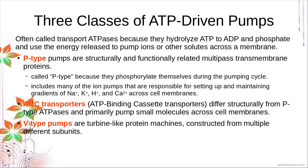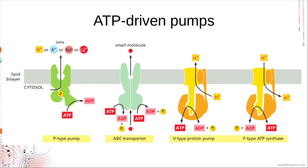We also have V-type pumps: turbine-like protein machines constructed from multiple subunits. Here are the three types of ATP-driven pumps. For the P-type, the phosphate group from ATP hydrolysis is transferred to the pump itself. For ABC transporters, they use two ATPs and just release the phosphate group. For the V-type proton pump, they also release the phosphate and are usually involved in proton transport.